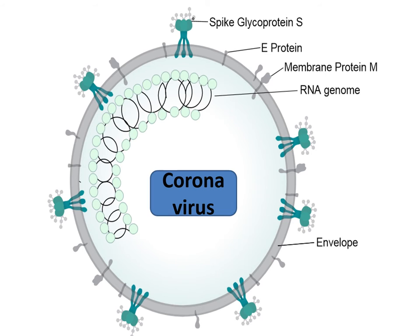This is the structure of the coronavirus. There is spike glycoprotein S, E protein, and membrane protein M. This shows the RNA genome and the envelope. This is a simplified sketch of the virus structure.